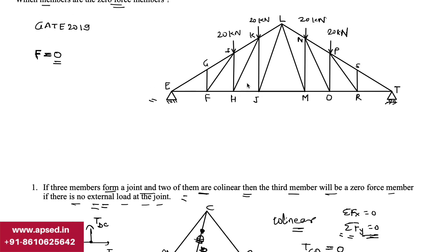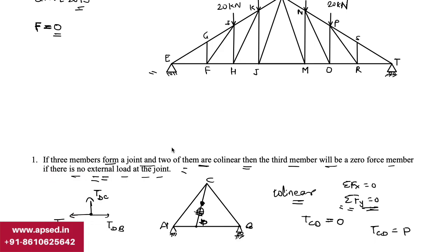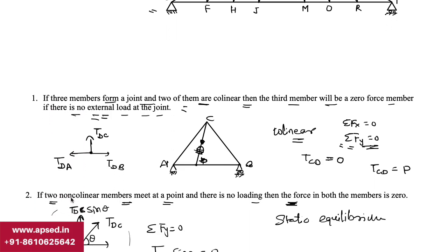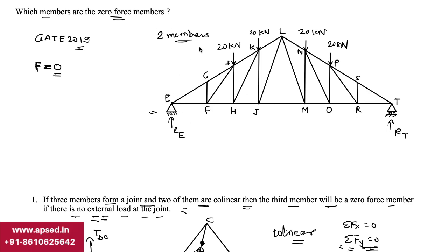Now we can apply this understanding to the GATE 2019 question. Starting with Rule 2, we look for any joint where only two members meet. Checking all interior joints, none have only two members. At the end supports, two members do meet, but end reactions RE and RT are acting there, so we cannot conclude any zero force members from Rule 2.